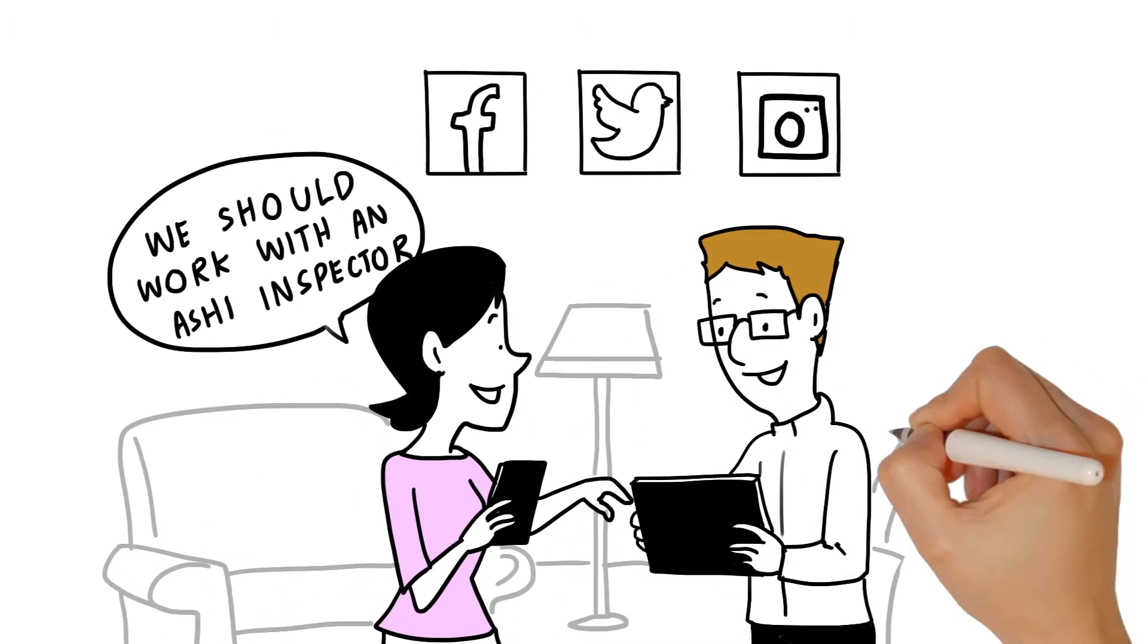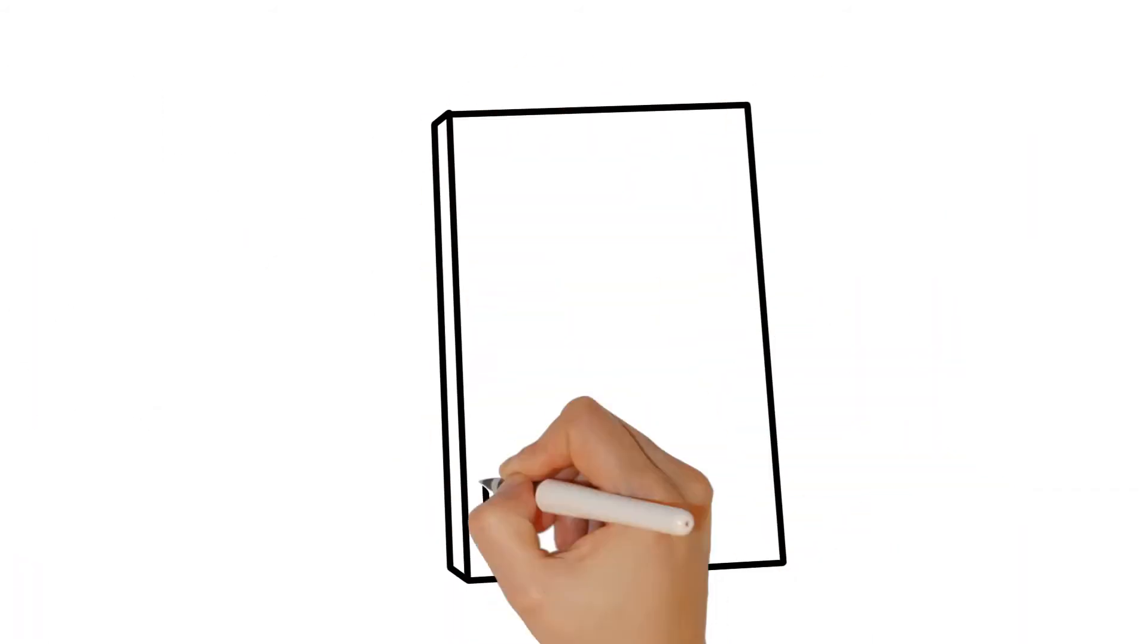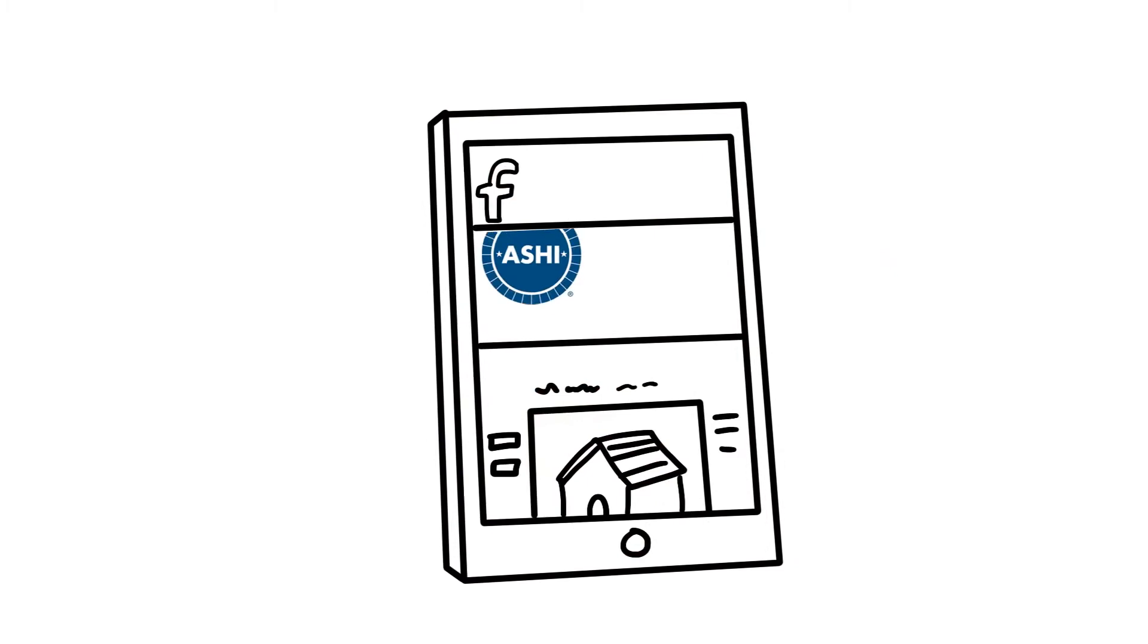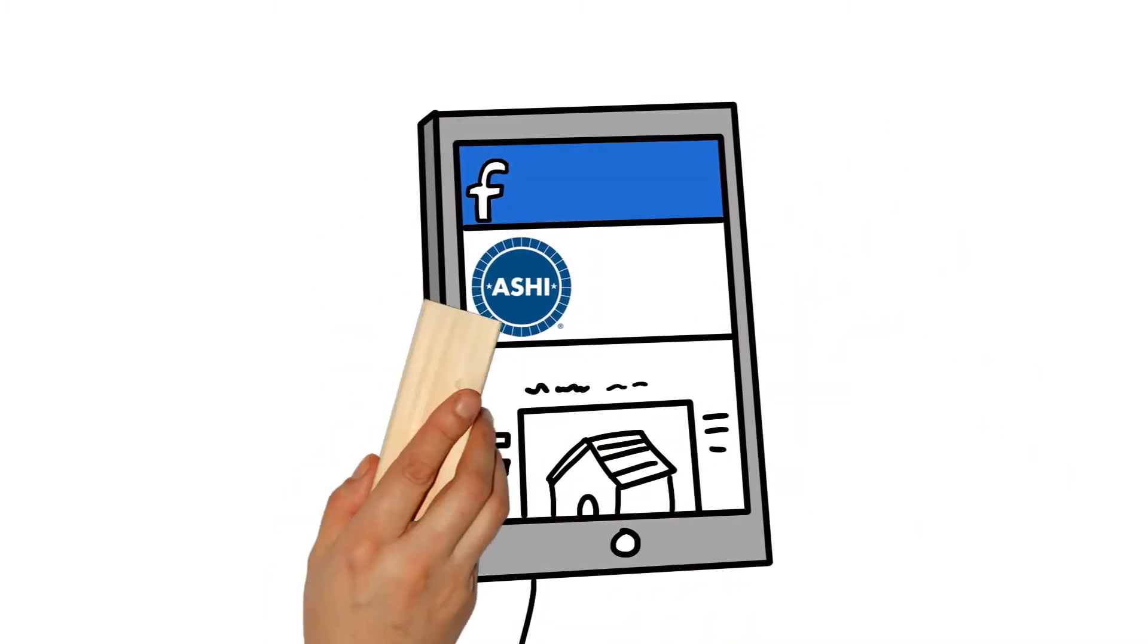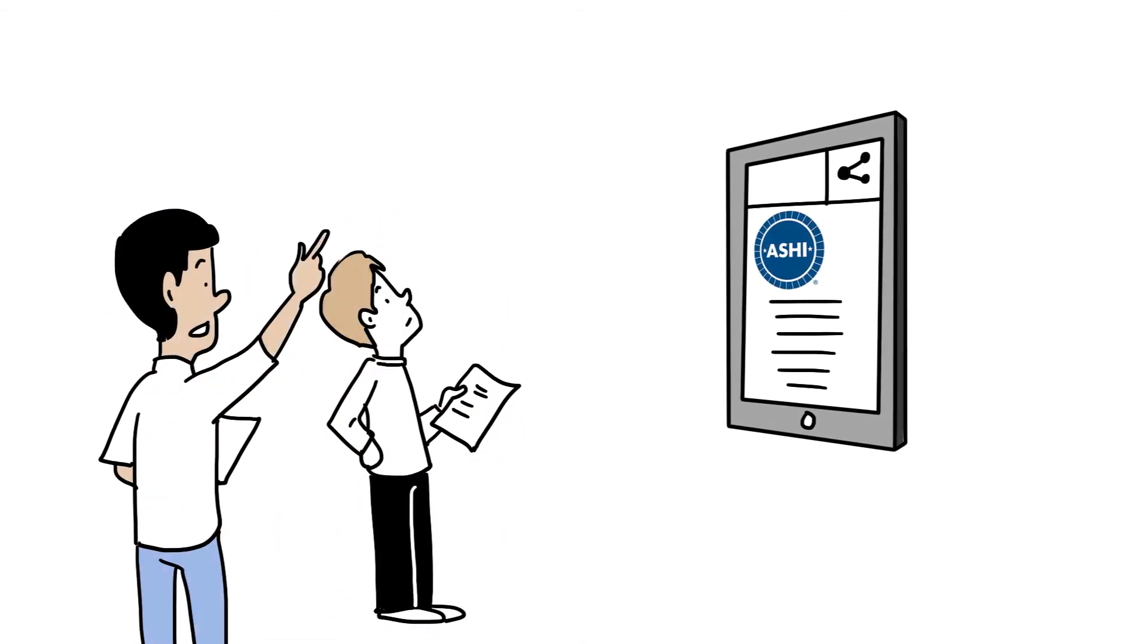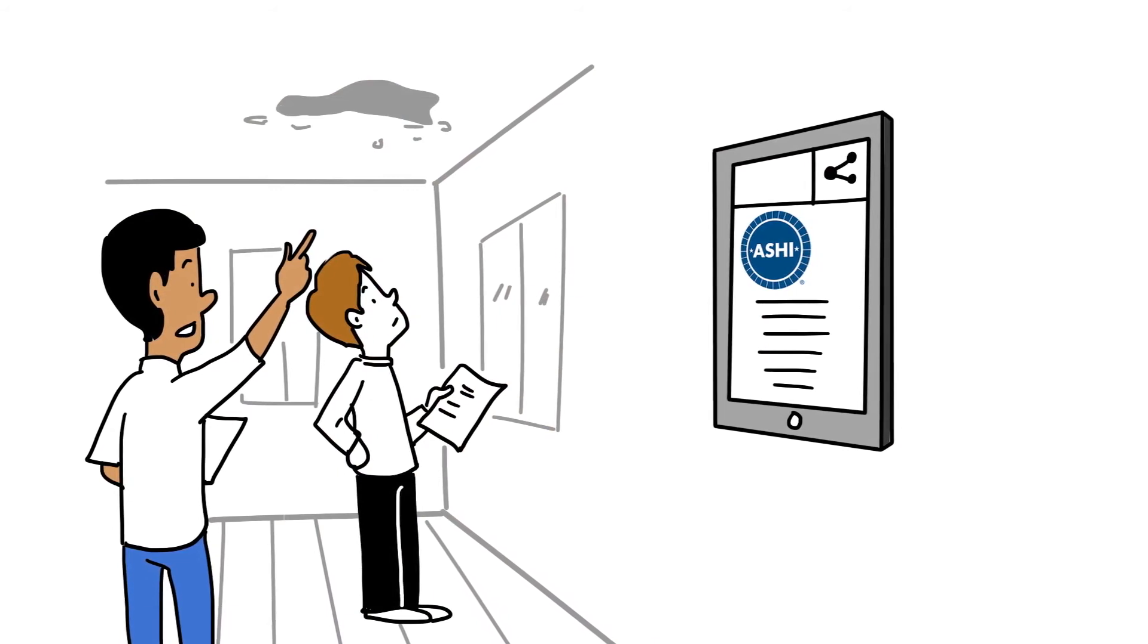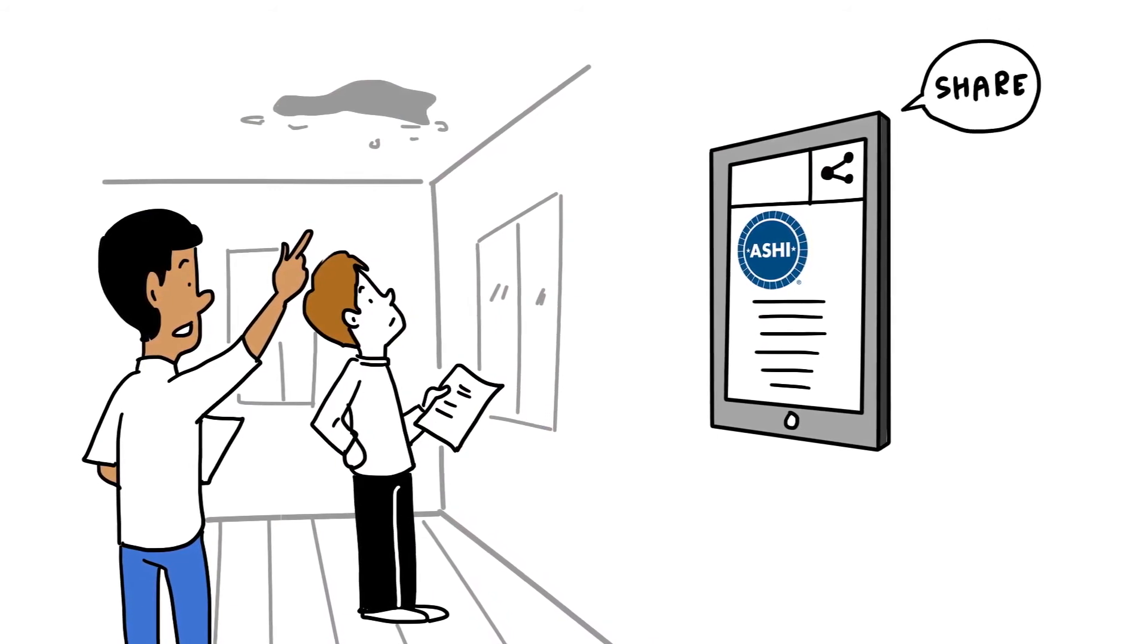We design content for the sites that appeal to potential ASHI customers. These days, potential customers look to the internet, and it's crucial that businesses have social media pages. But we understand that ASHI members are working full-time as home inspectors and don't always have time to manage social media pages for their businesses. That's why we make content that members can share.